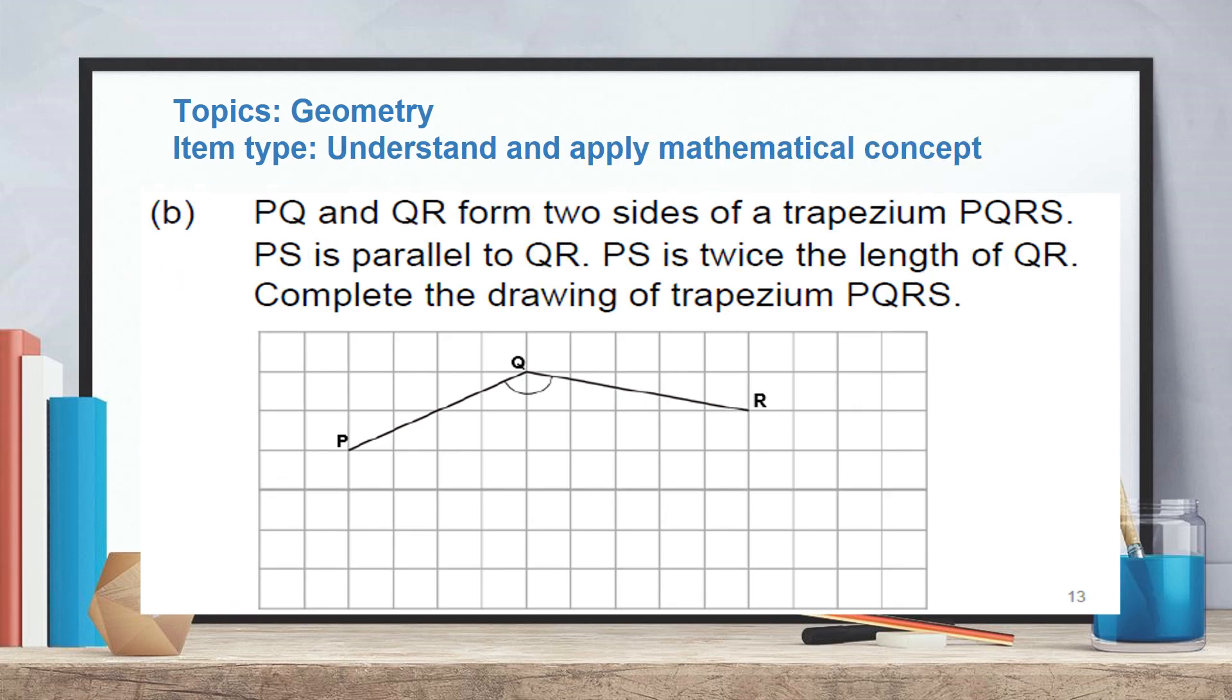The second part of this question is testing on understanding and the application of the concept of angles and four-sided figures. PQ and QR form two sides of a trapezium PQRS. PS is parallel to QR. PS is twice the length of QR. Complete the drawing of trapezium PQRS. So first, students need to recall the properties of trapezium. So there should be one pair of parallel lines. And then they need to apply in this context which two lines are parallel. And then they need to understand which line is twice the length of which line. So after they apply that concept, they should arrive at this answer.